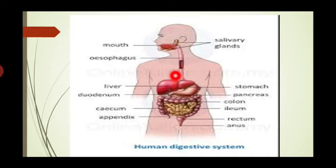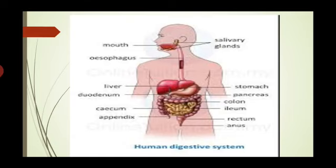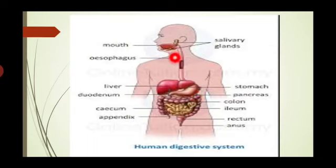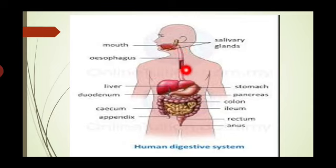The movement of food from the mouth into the pharynx and then into the esophagus is called deglutition, or swallowing. Mixing movements occur in the stomach as a result of smooth muscle contraction. These repetitive contractions occur in small segments of the digestive tract. Another important movement propels food particles through the digestive tract.